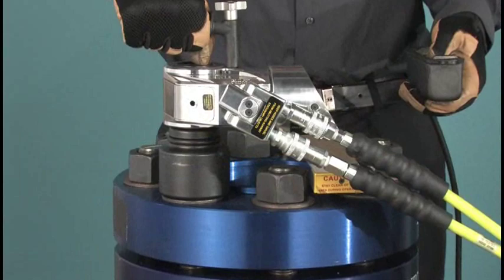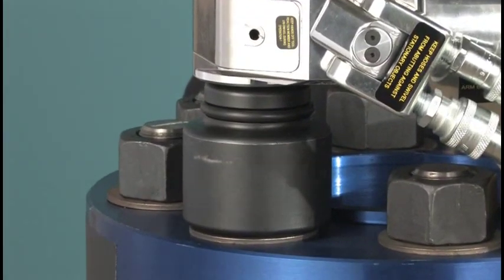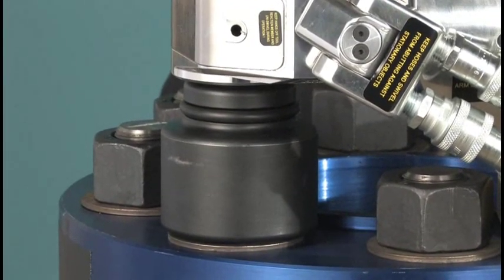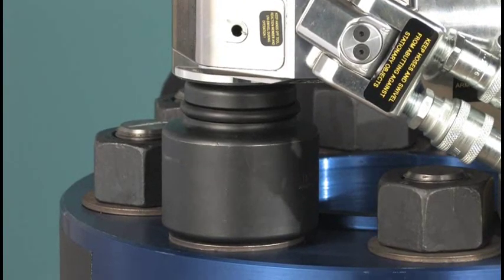Ratchet the wrench until it stalls at the preset pressure, and the socket will no longer turn. Be patient on the last few strokes, as the socket will move very slowly.